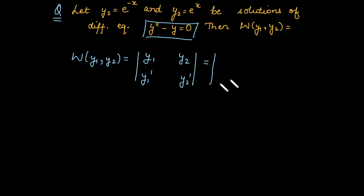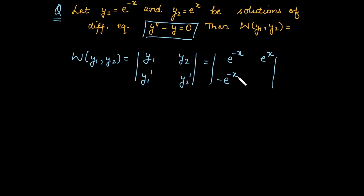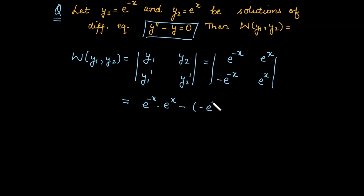So we place e^(-x) and e^x in the first row. The derivative of e^(-x) is -e^(-x), and the derivative of e^x is e^x. This gives us e^(-x) · e^x minus (-e^(-x)) · e^x.